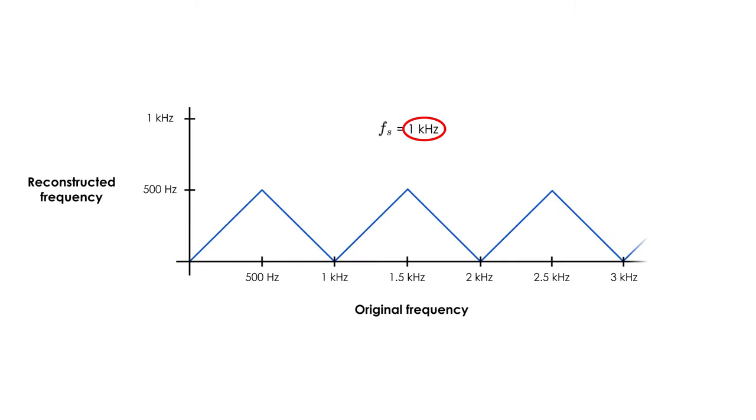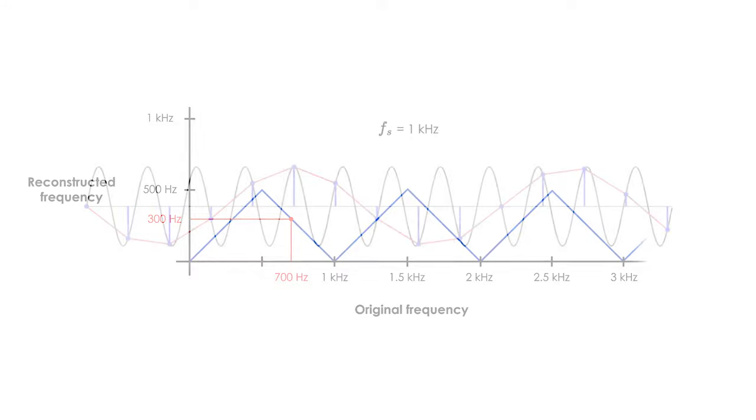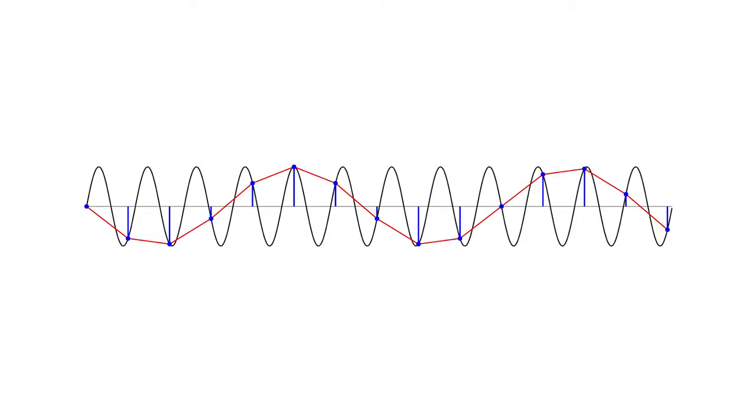So, with a sampling rate of 1000 Hz, 500 Hz is the maximum frequency that we can sample without aliasing. Another example with this sampling rate is that if we try to sample a 700 Hz wave, we will get a 300 Hz digital wave. This would look like the first visual example I showed.